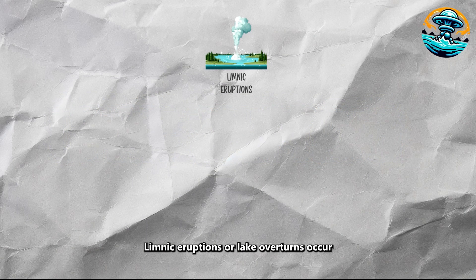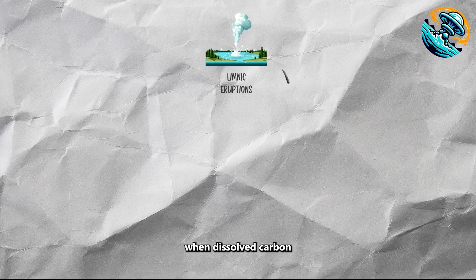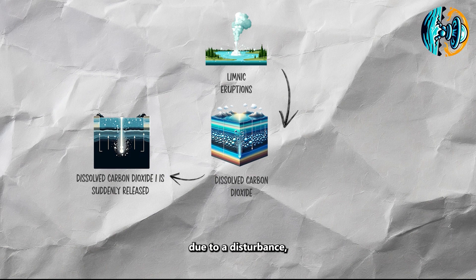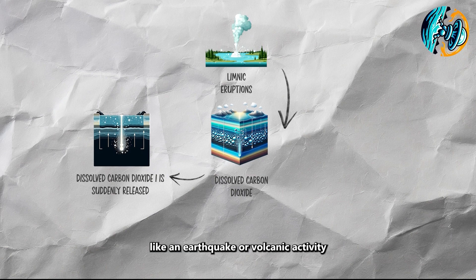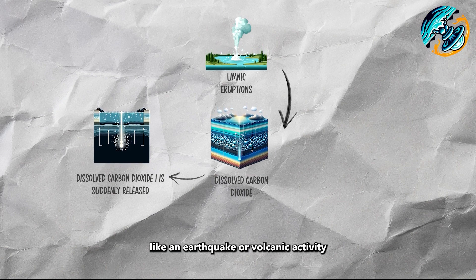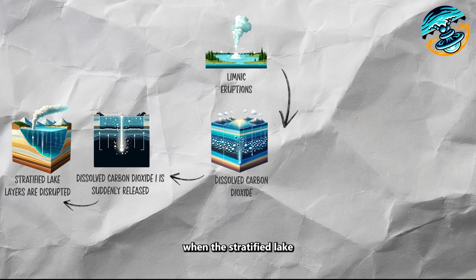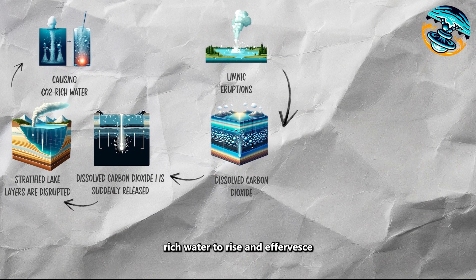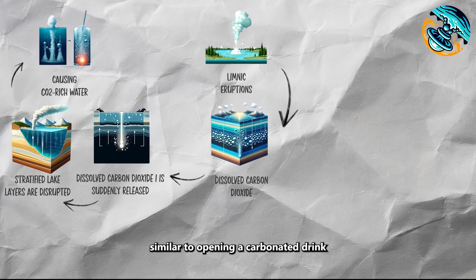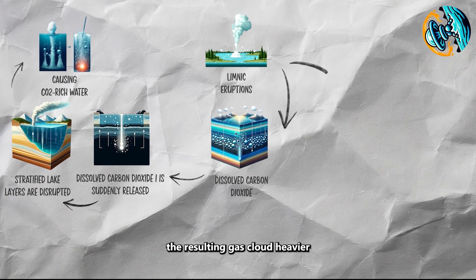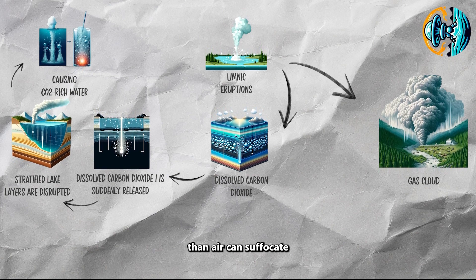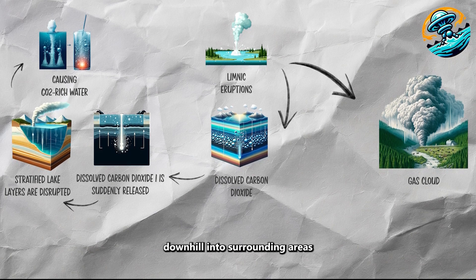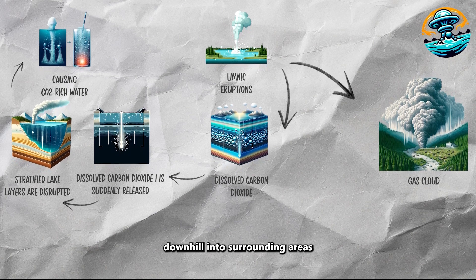Limnic eruptions, or lake overturns, occur when dissolved carbon dioxide in deep lake waters is suddenly released due to a disturbance like an earthquake or volcanic activity. This release can happen when stratified lake layers are disrupted, causing CO2-rich water to rise and effervesce, similar to opening a carbonated drink. The resulting gas cloud, heavier than air, can suffocate wildlife, livestock, and humans as it flows downhill into surrounding areas.